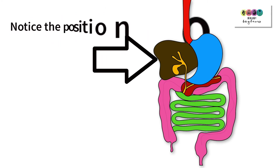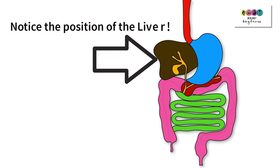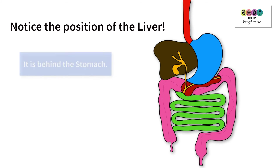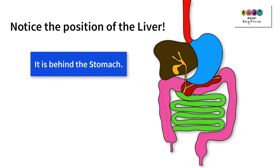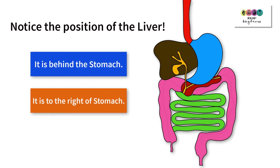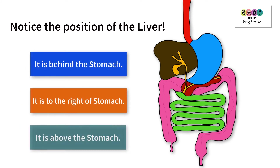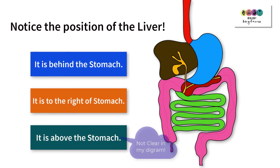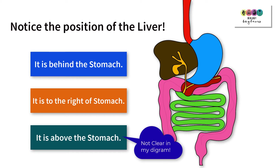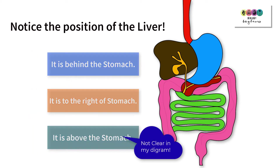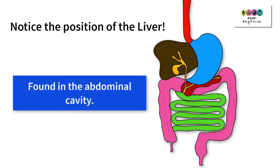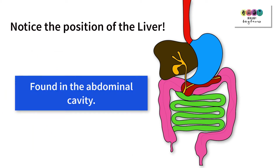For example, notice the position of the liver. It's behind the stomach, to the right of the stomach, and also slightly above the stomach. Know exactly where the liver is and what cavity it's in — it's in the abdominal cavity.